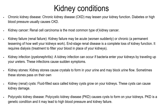Finally, let's have a look at kidney conditions. Chronic kidney disease can lessen your kidney function, caused by diabetes or high blood pressure. Kidney cancer — the most common type is renal cell carcinoma. Kidney failure, also known as renal failure, can be acute — worsening suddenly — or chronic, a permanent lessening of kidney function. End-stage renal disease is a complete loss of kidney function requiring dialysis. Pyelonephritis, or kidney infection, is where bacteria enter your kidneys travelling up the urethra, causing certain symptoms. Kidney stones cause crystals to form in urine that can block urine flow — sometimes these pass on their own. Renal cysts are fluid-filled sacs that grow on your kidneys and can cause damage. Polycystic kidney disease, or PKD, is a genetic condition causing cysts to form on the kidneys, potentially leading to high blood pressure and kidney failure.